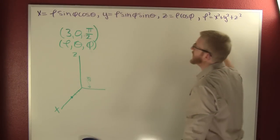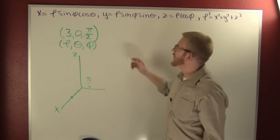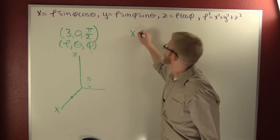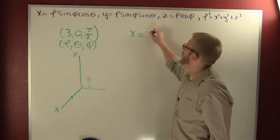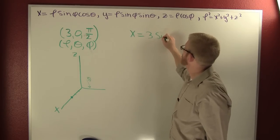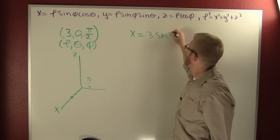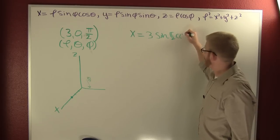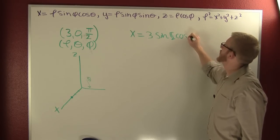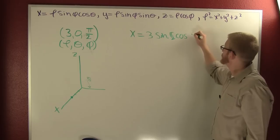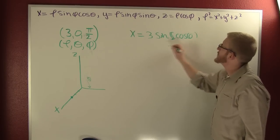We know that our x is going to be rho times sine phi times cosine theta. So x equals 3 times sine of pi over 2 times cosine of 0.